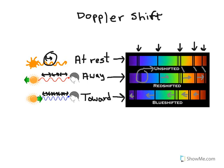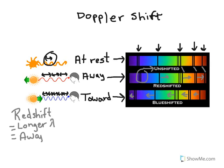So, which way the lines move determines which way the star moves. In a red shift, we're going to longer wavelengths, and that occurs when the object is moving away. If it is a blue shift, then we observe shorter wavelengths, and that occurs when the object is moving towards us.